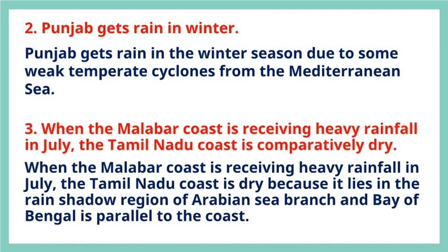Question 3: When the Malabar coast is receiving heavy rainfall in July, the Tamil Nadu coast is comparatively dry. The Tamil Nadu coast is dry because it lies in the rain shadow region of the Arabian Sea branch, and the Bay of Bengal branch is parallel to the coast.